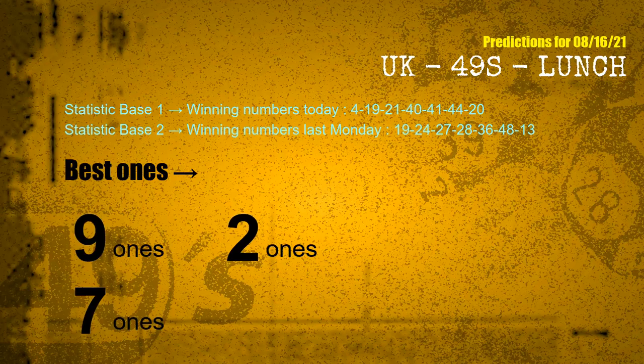According to the statistics above, with winning numbers today 04, 19, 21, 40, 41, 44, 20, and winning numbers last Monday 19, 24, 27, 28, 36, 48, 13, the frequent following units digits are 9-ones, 2-ones, and 7-ones.